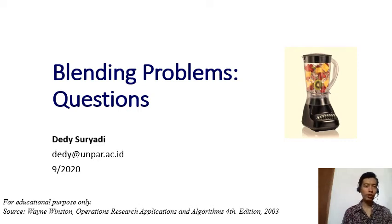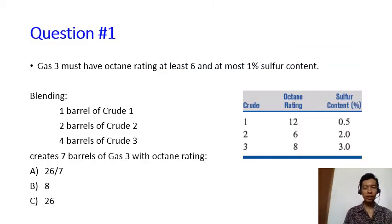Here are some additional questions to check your understanding on blending problems. Using the data and the constraint from the Suncoil problem,